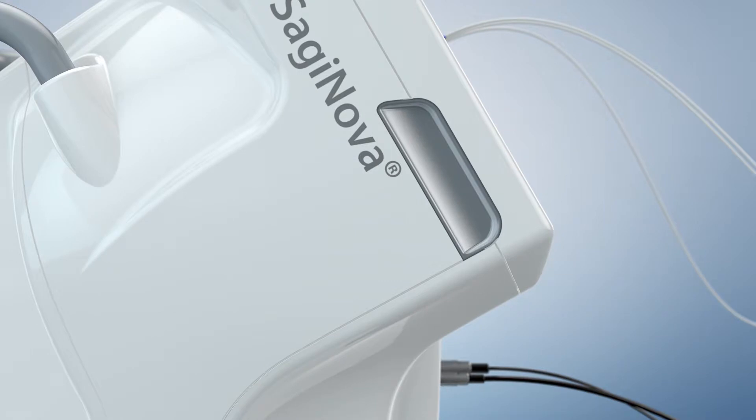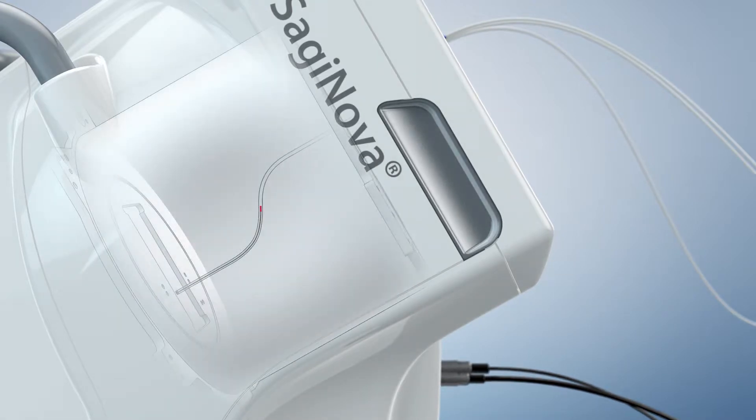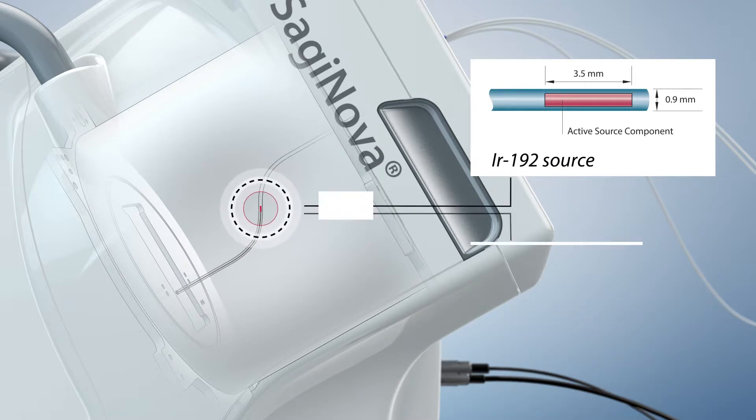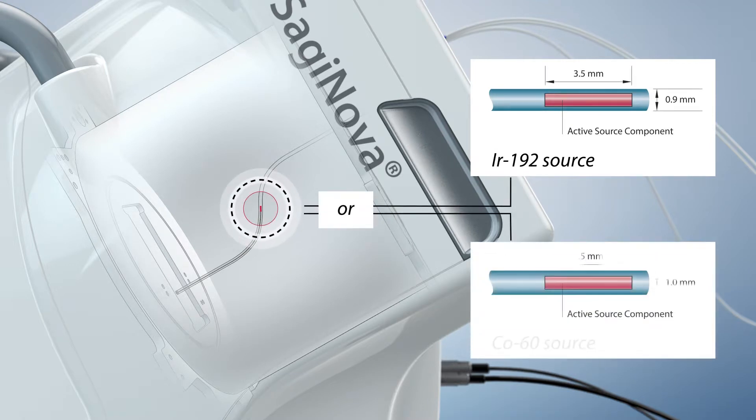Eckert & Siegler-Bebig exclusively provides the unique choice of two isotopes, Iridium-192 and Cobalt-60.